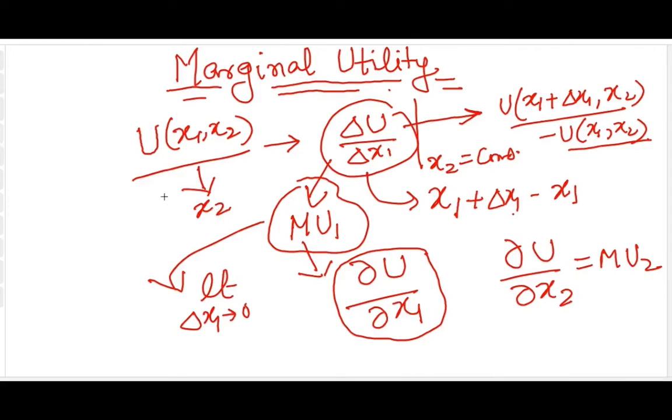And just a corollary: if this is the expression for average change, you can say that delta U is equal to MU1 times delta x1, and if it is MU2 it will be delta x2. The change in utility can be presented in terms of the average marginal utility, and similarly I can use the instantaneous marginal utility as small change in utility equals MU1 times del x1.